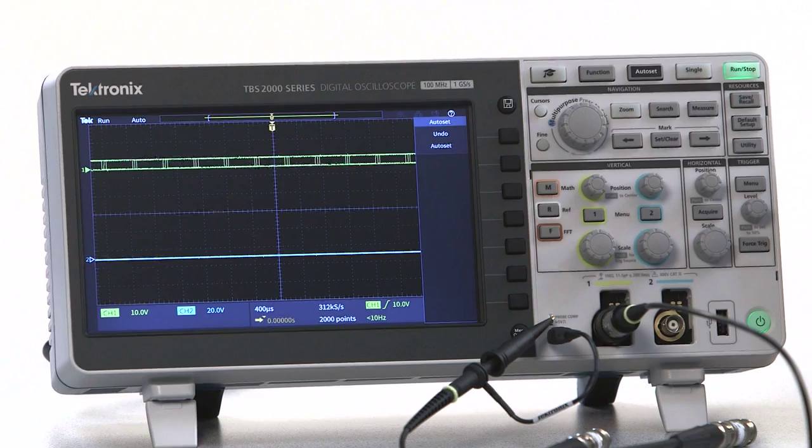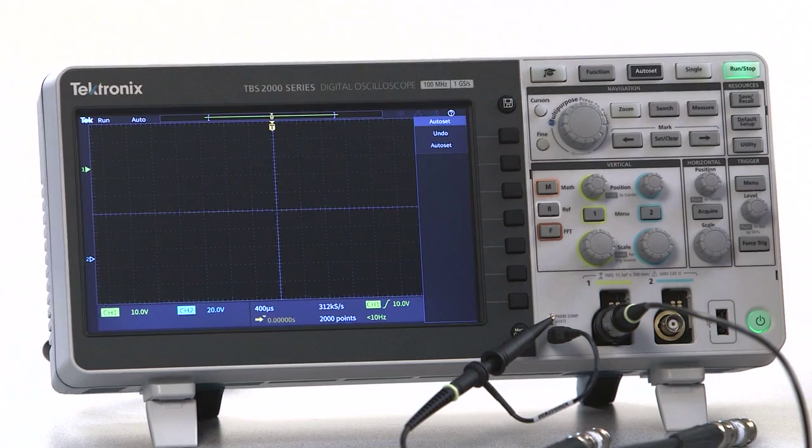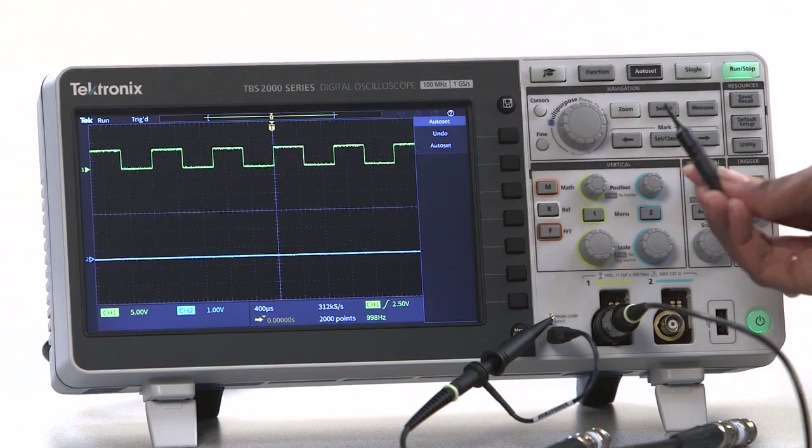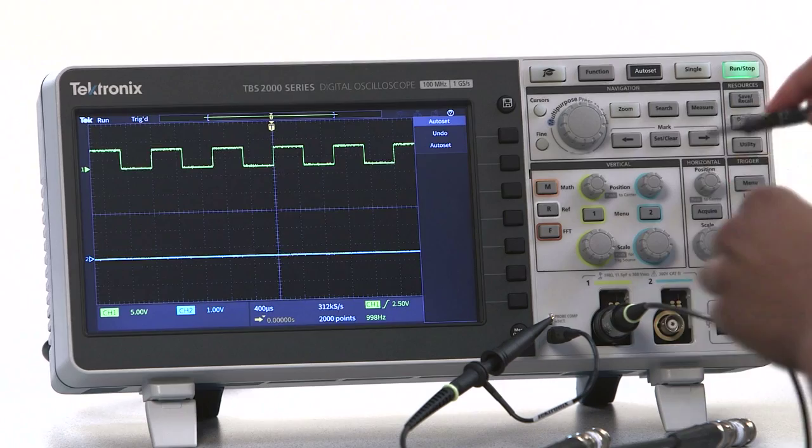I'll use AutoSet to get the compensation signal on the screen. Use a small tweaker, which is usually included with the probe, to turn the compensation adjustment on the probe until the signal looks like a square.